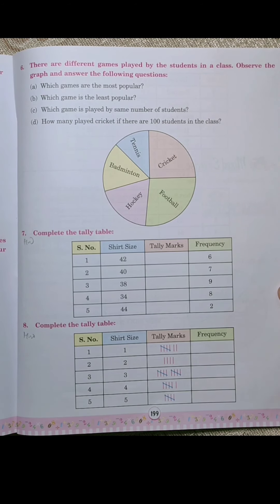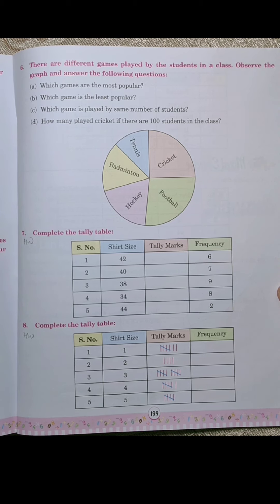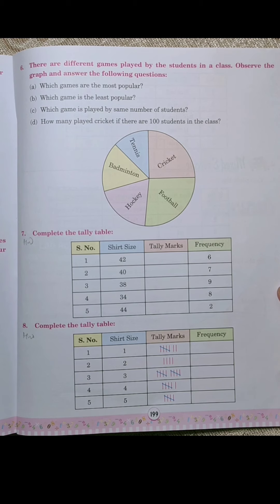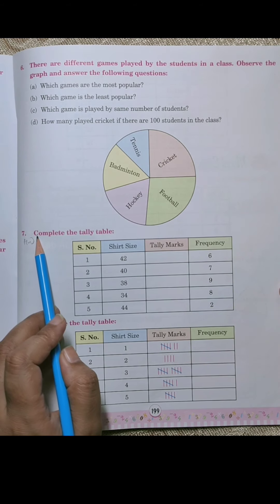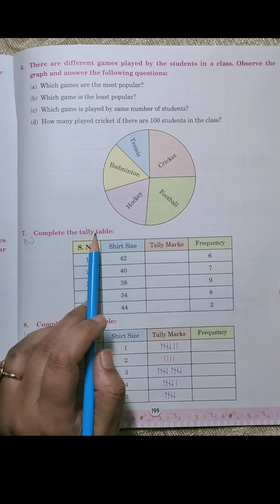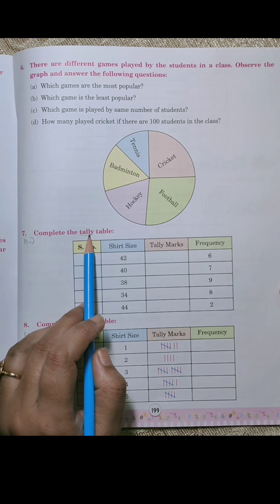Now, page number 199. We will do sum numbers 7 and 8. These sums were given as homework, so I will explain them and you can match your answers. Sum number 7 is 'complete the tally table'. Yesterday I explained how to mark tally bars or tally marks.